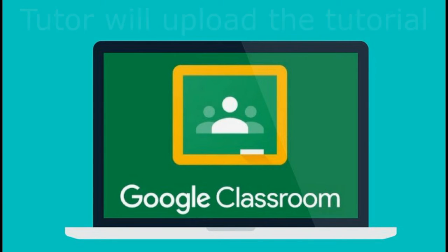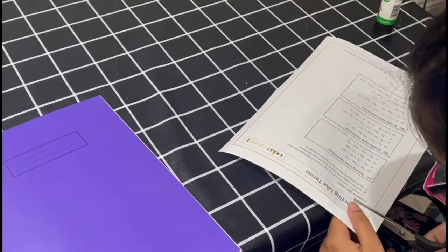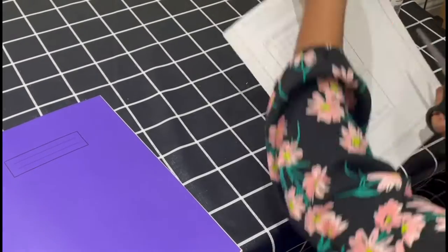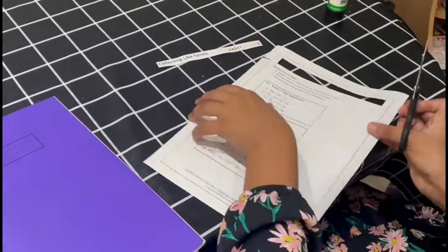Students need to print off the tutorials from the Google Classroom, and they need to cut the questions and the topic heading using a pair of scissors. They may ask adults for help with this task and take extra care using scissors.